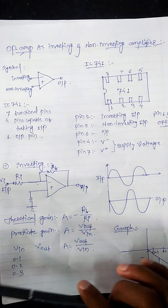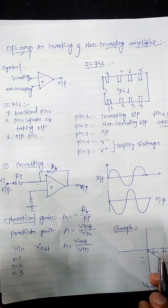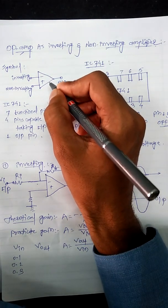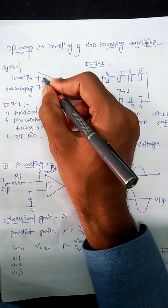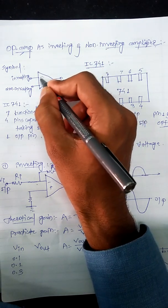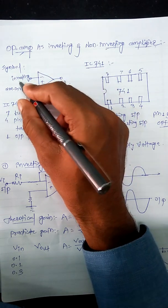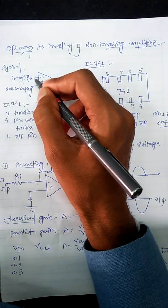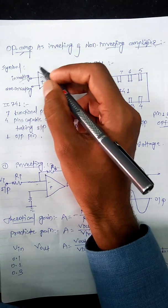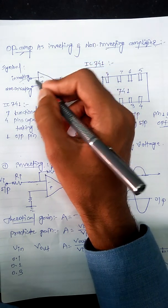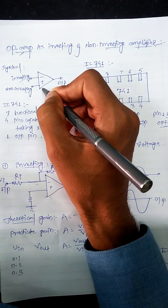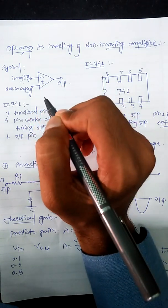Inverting and non-inverting. Before that, I am explaining the general symbol of the op-amp. It has a negative terminal and a positive terminal. The negative one is called as the inverting — whenever we are giving the input to the negative terminal, that is called an inverting operational amplifier. Whenever we are giving the input signal to the positive terminal, then it is the non-inverting amplifier.